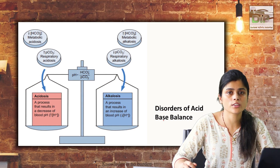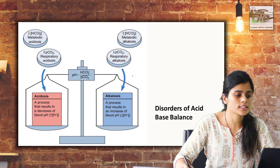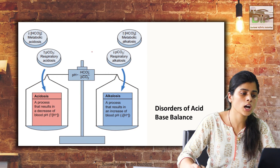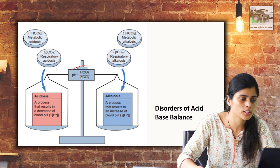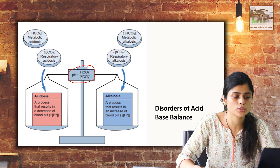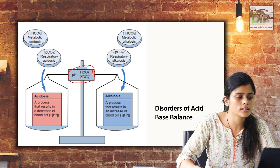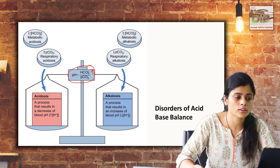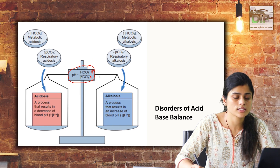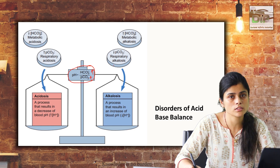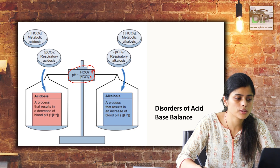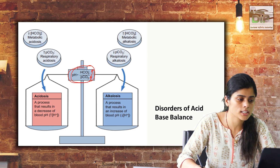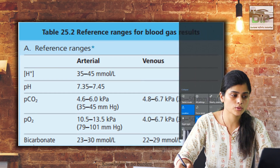Now coming on to the disorders of acid-base balance. Here you can see the picture which shows how acidosis and alkalosis is balanced by the maintenance of pH with bicarbonate and pCO2. If bicarbonate is increased it leads to metabolic alkalosis. If pCO2 is increased it can lead to respiratory acidosis and vice versa. So increase in pH and decrease in pH is regulated by HCO3 and pCO2.